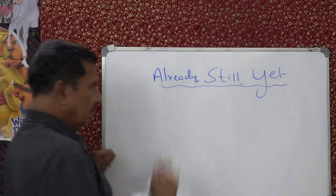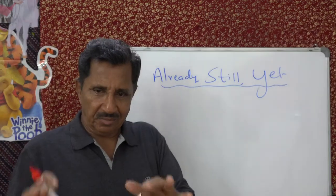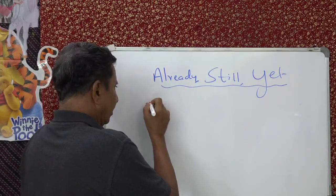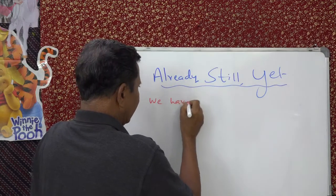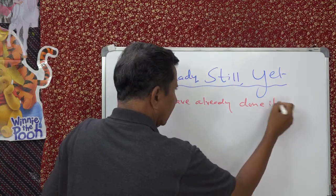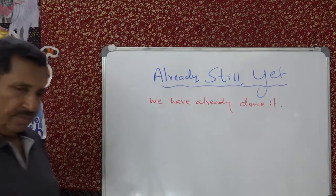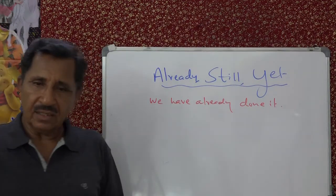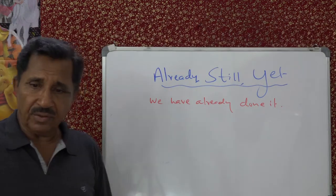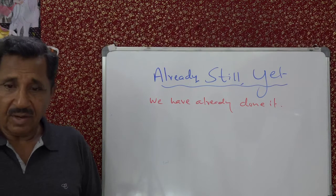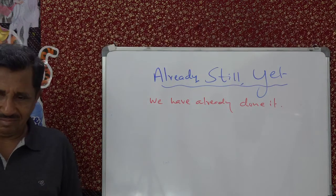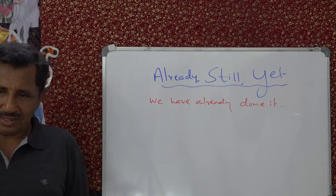When we say 'already,' the action is complete by the time of speaking. As I would say, we have already done it. I have already seen you. We have already gone for the interview. We have already done our examinations. So 'already' means it's over — by the time of speaking, it is over.